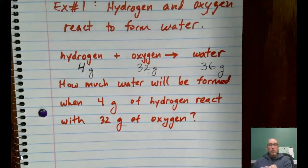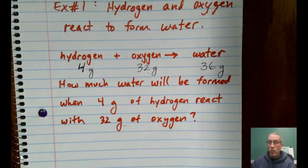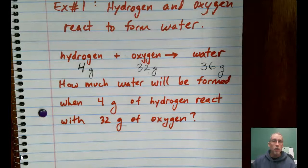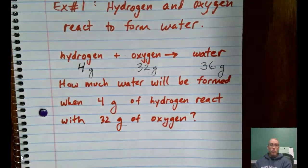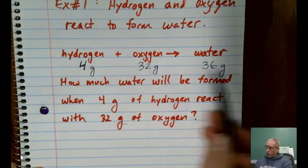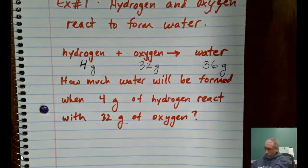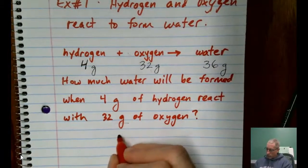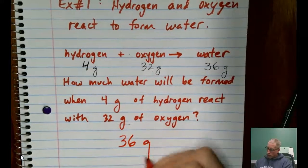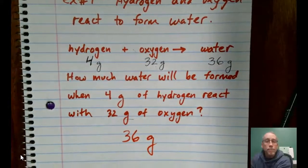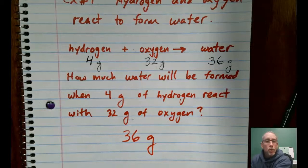Because all that mass is still here's a fancy word that we use conserved. Conserved means it doesn't go anywhere and it doesn't like come out of nowhere. It's all the same after as it was before. So, the total before and the total after is the same. So, the answer is 36 grams. Let's look at another one.